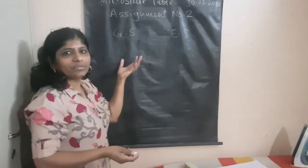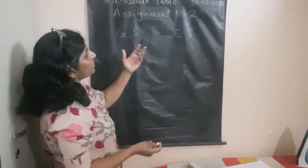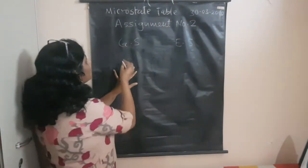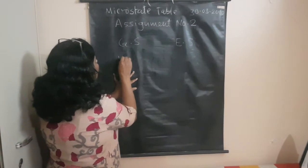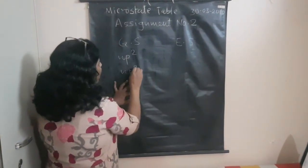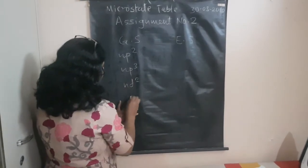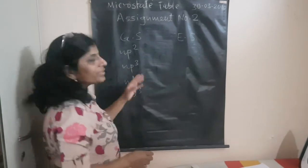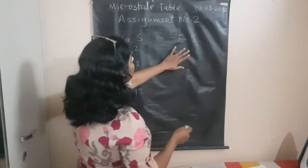The question will be to construct a microstate table for ground state or excited state configuration. In ground state configuration, possible configurations are Np2, Np3, Nd2, and Nd3.